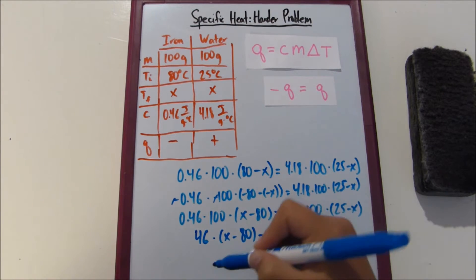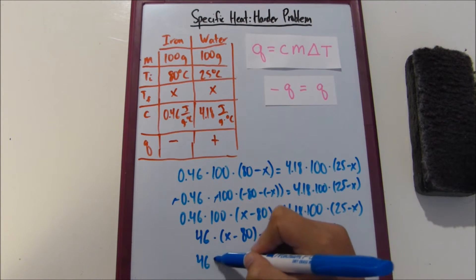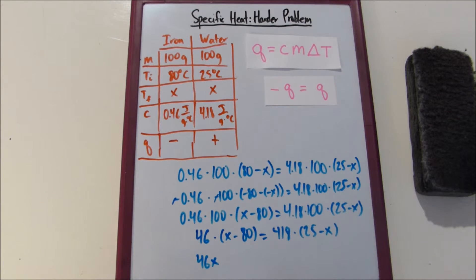0.46 times 100 times X minus 80 equals 418. All right, then we multiply across again. 46X. Can you still see that? Yeah, okay, good.